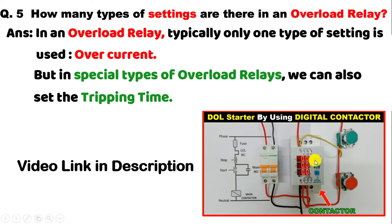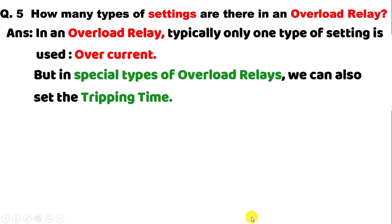For where the option to set time is in an overload relay — I already made a video on this. In that video you saw a digital contactor, in which an overload relay was inbuilt, with two knobs to set overcurrent and time. But it's not only in digital contactors — in special normal overload relays also you get two options. So the answer is: normal overload relay gives one option to set overcurrent, but special type of overload relay allows setting tripping time as well. Click on the right-hand side video to learn about digital contactors.